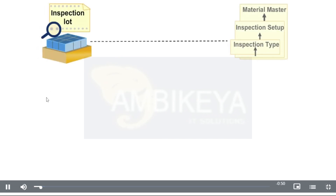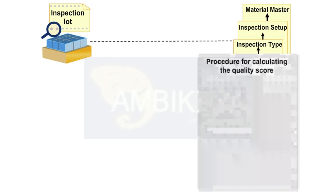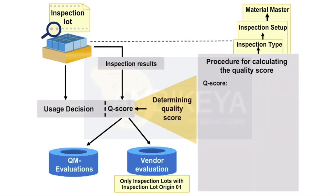Once the usage decision has been made, the system determines the quality score, or Q score, for the inspection lot. You can define the procedure for calculating the quality score in customizing and store this procedure in the inspection setup in the QM view of the material master.